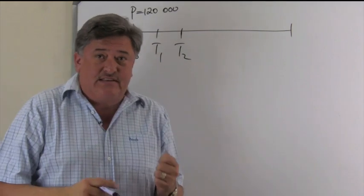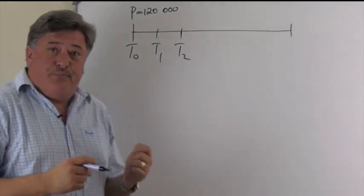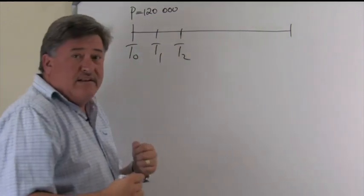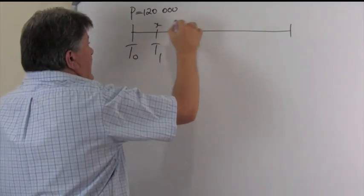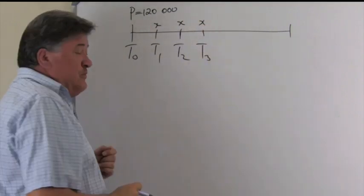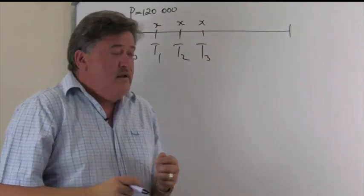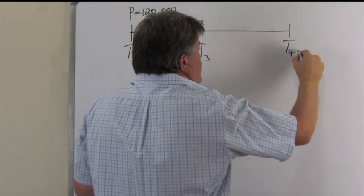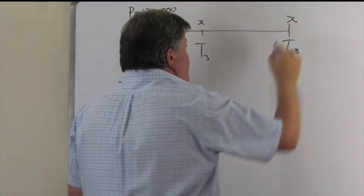This is now given to us, this loan amount, our P value. The payments, we don't know, that is what they want us to calculate. So, that is X and X, and she's going to pay this amount that we want to find, right up for a period of four years, of course, then 48 months.